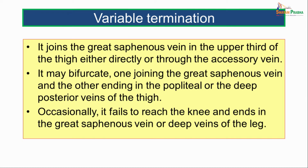Occasionally the small saphenous vein fails to reach the knee and ends in the great saphenous vein or in the deep veins of the leg. These are the variable terminations of the small saphenous vein.